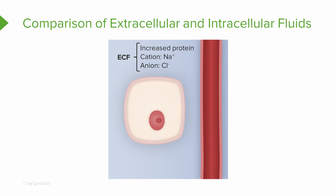Each of our fluid compartments has distinctive patterns of electrolytes. In the extracellular fluid compartment, the electrolyte content is pretty much similar all over the body, except in the plasma where we have a higher protein and lower chloride ion content. The major cation in our extracellular fluid is sodium ion, and the major anion is chloride ion. In our intracellular fluid compartment, the fluid contains mostly soluble proteins, has a low sodium and chloride content, the major cation is potassium, and the major anion is phosphate ion.